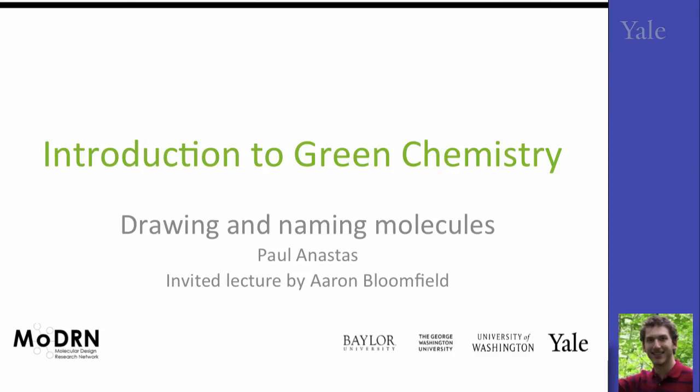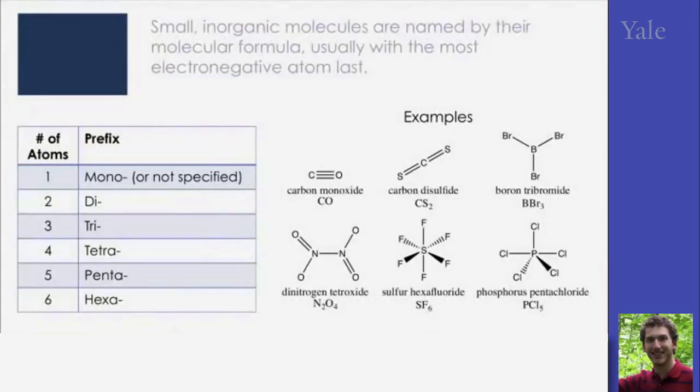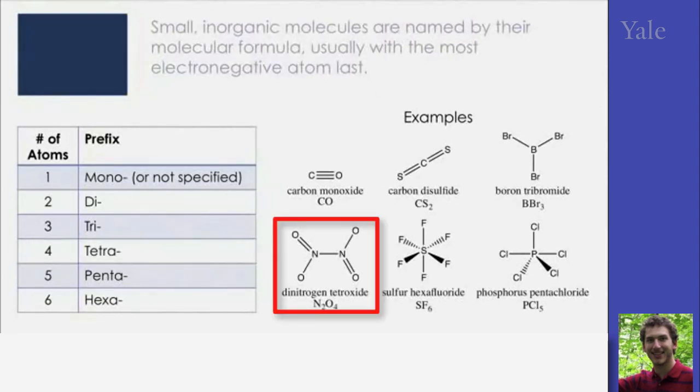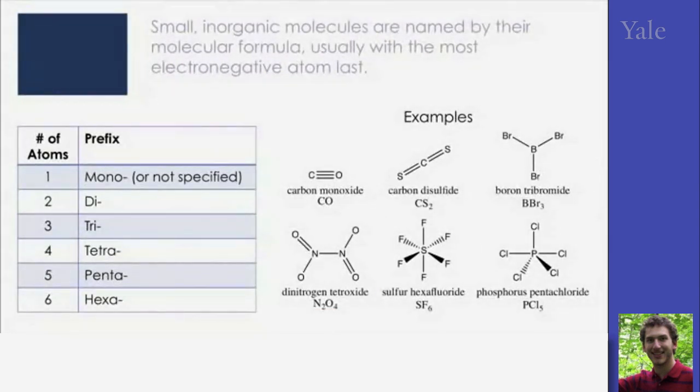Drawing and naming molecules. Small inorganic molecules are named based on their molecular formula, usually using the most electronegative atom last. And then we use prefixes that denote the number of atoms. For example,